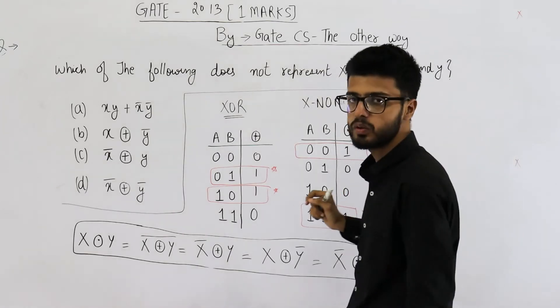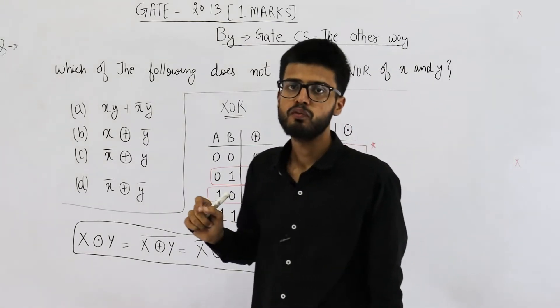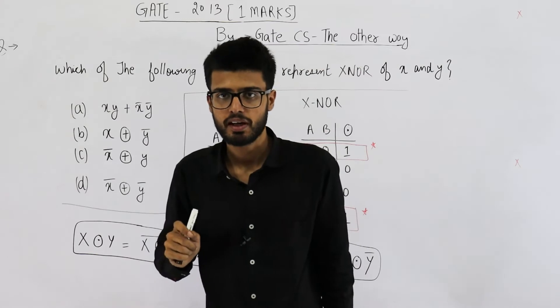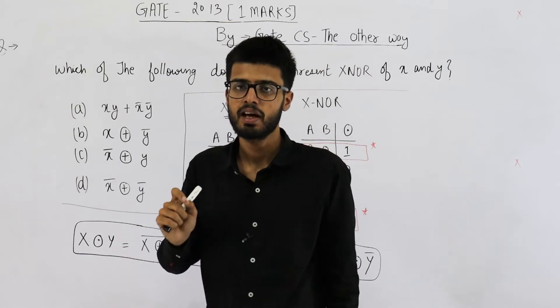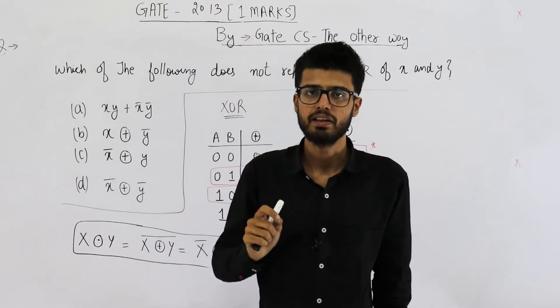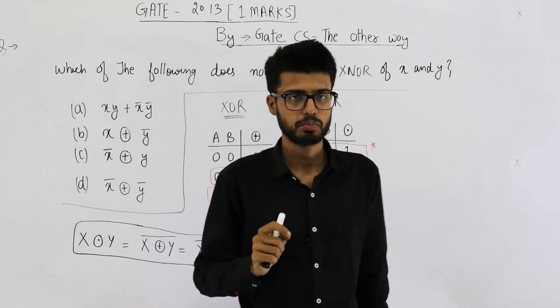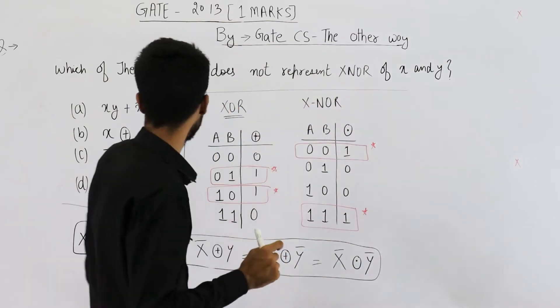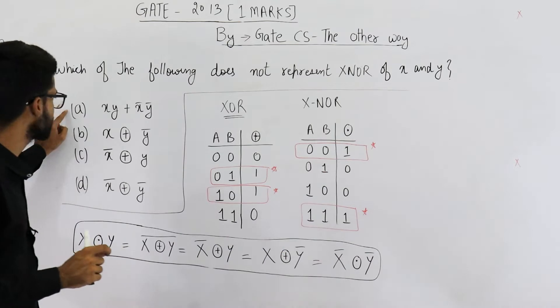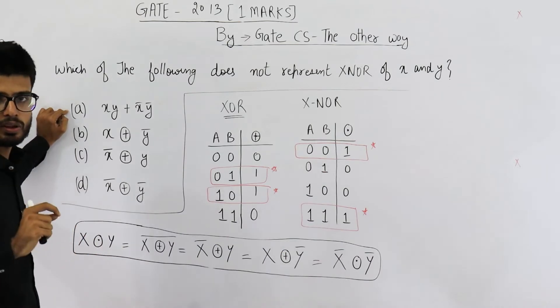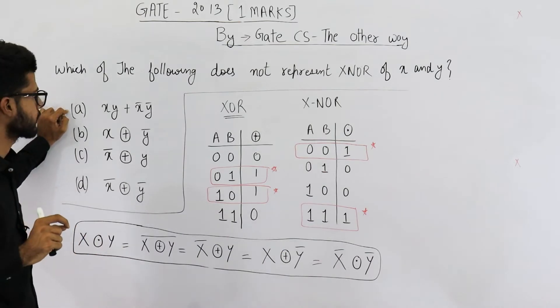Now you very well know the formula for X-NOR: XY + X̄Ȳ. So option A actually represents X-NOR.